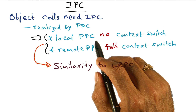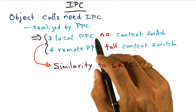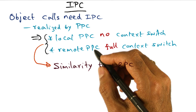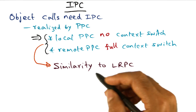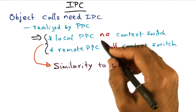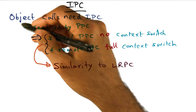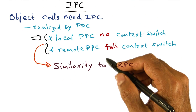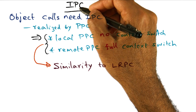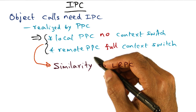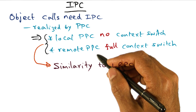Similar to microkernel-based operating system design, functionalities in the Tornado operating system are contained in clustered objects. These clustered objects have to communicate with one another in order to implement the services. Because it's not a monolithic kernel anymore — it's a microkernel with functionalities contained in these objects — we need efficient inter-process communication via object calls that go between an object acting as a client and an object acting as a server.